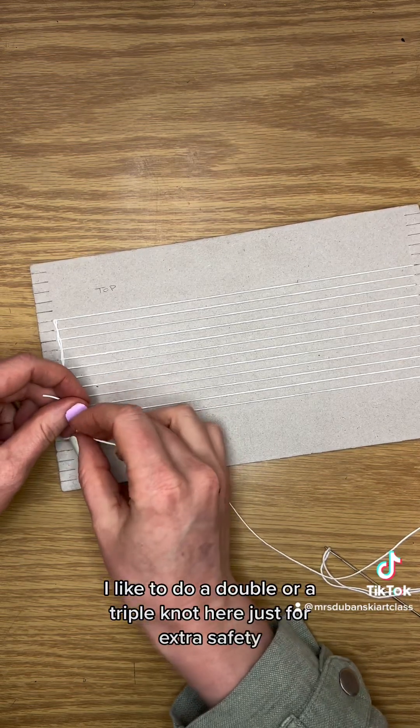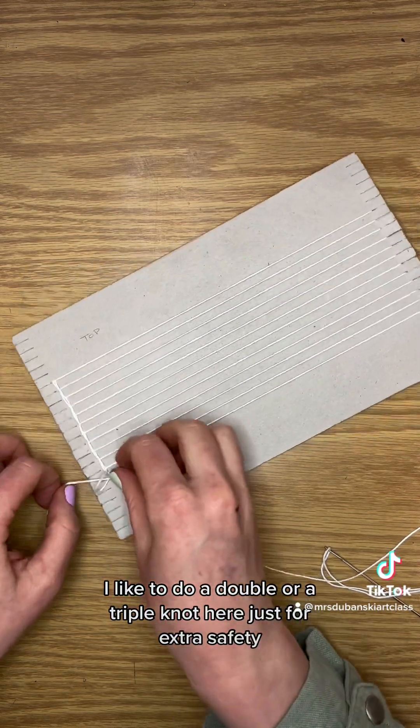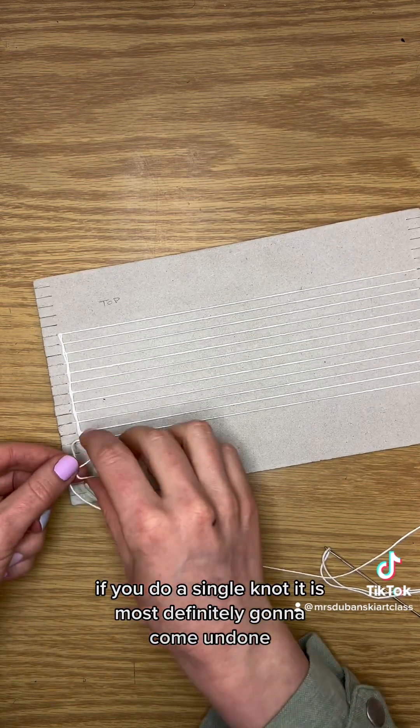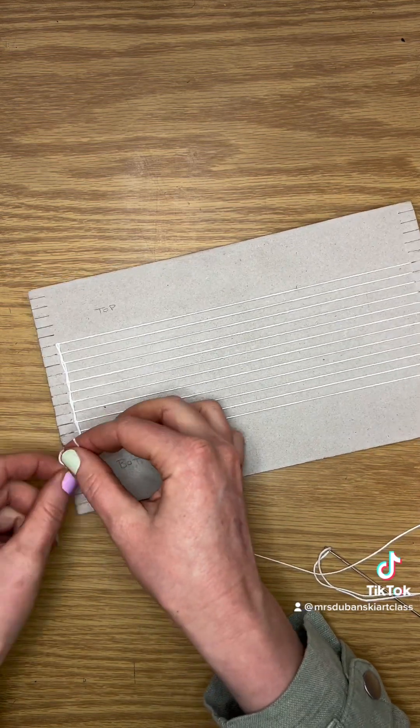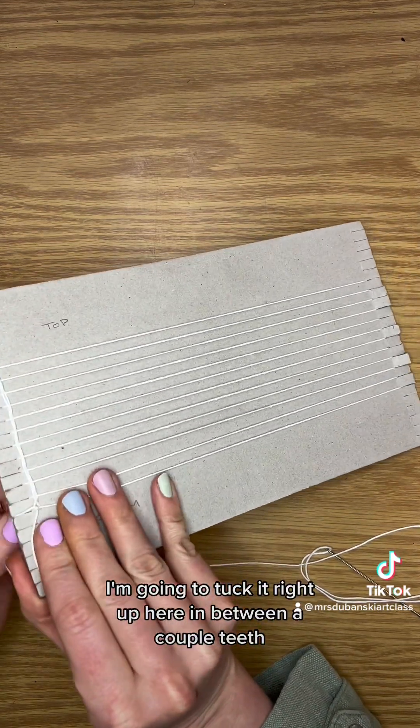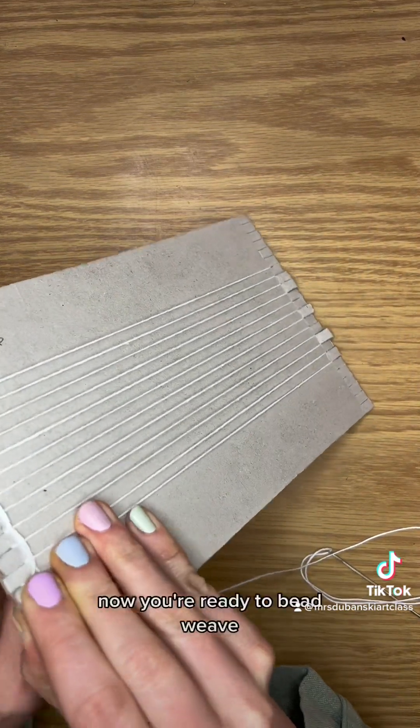I like to do a double or a triple knot here just for extra safety. If you do a single knot, it is most definitely gonna come undone. And then as you can see, I'm gonna tuck it right up here in between a couple teeth. Now you're ready to bead weave!